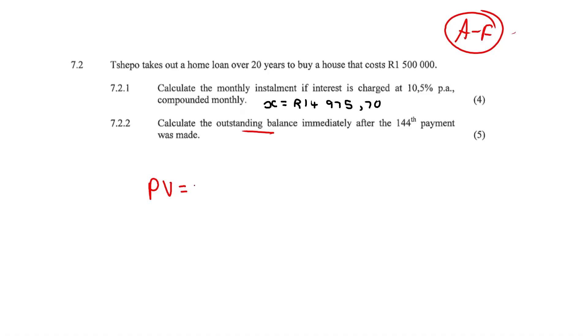Our X value is still going to be the 14,975 comma seven zero. Everything else remains the same. Interest is exactly the same, that 0.105, the 10 and a half percent over 12, exactly the same.